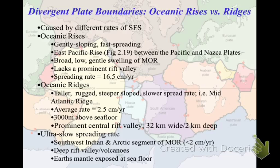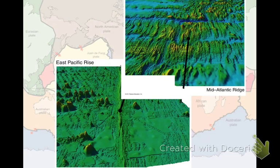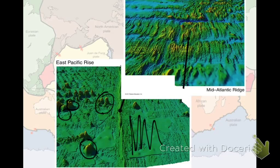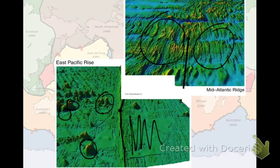Mid-ocean ridges can be very tall — three kilometers above the seafloor — with a very obvious rift valley that is quite deep compared to the ridge around it. There are also ultra-slow spreading centers, including a famous one in the southwest Indian plate where plates barely move at all. Computer-coded sonar images comparing the mid-Atlantic Ridge versus the East Pacific Rise show that the East Pacific Rise has areas with seamounts but the plate itself is very flat with a weak ridge system, while the mid-Atlantic Ridge is much more mountainous with a more prominent valley — a result of its slower spreading rate.